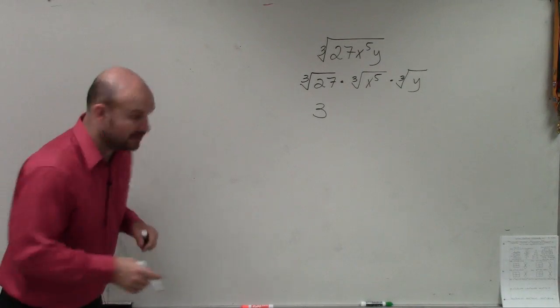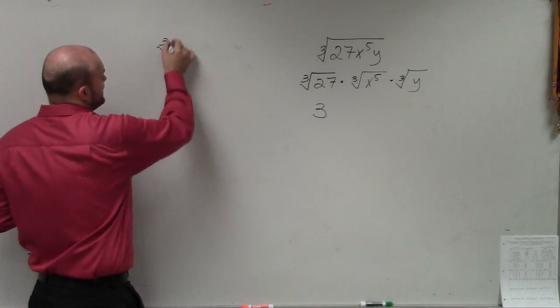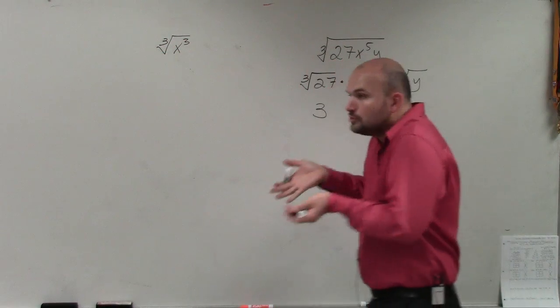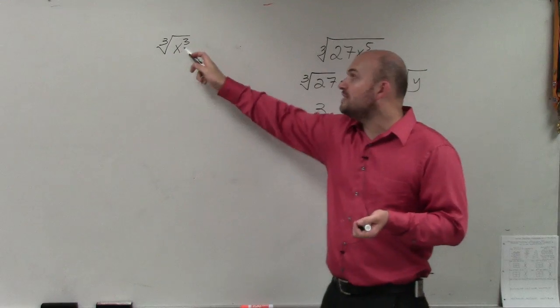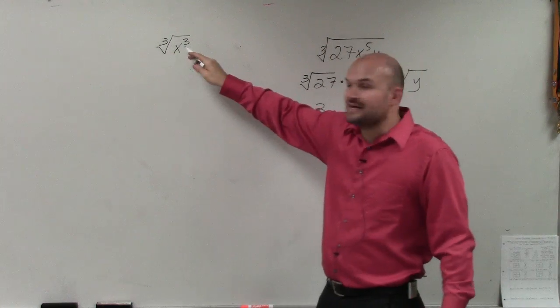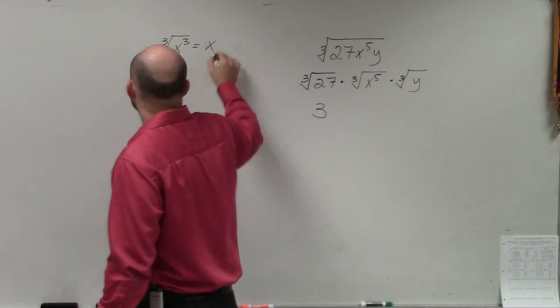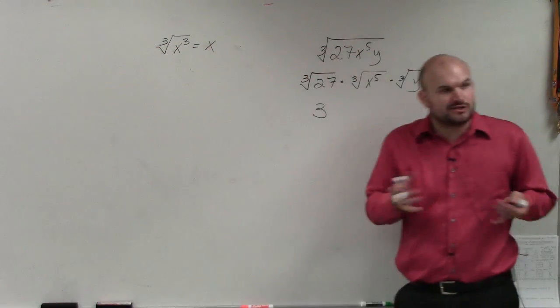Now for variables, it's a little bit different. Even though I did give you the cubed variables, to take the cube root of a variable, we have to have that variable raised to the third power. So that would just equal x. I can take the cube root of x cubed, right?